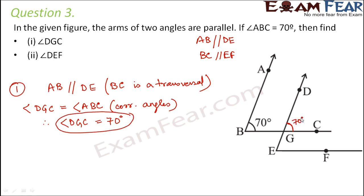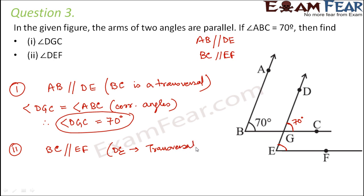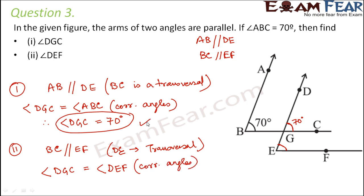Now for the second part, find angle DEF. Here BC is parallel to EF, and DE acts as a transversal. The corresponding angles are angle DGC and angle DEF. Therefore angle DGC equals angle DEF because these are a pair of corresponding angles. Since DGC is 70 degrees, angle DEF is also equal to 70 degrees.